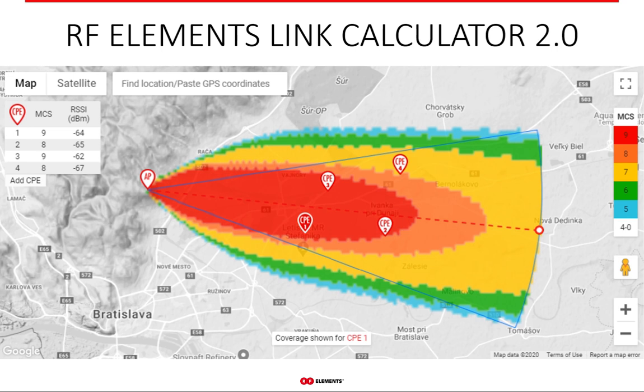If you're wondering how to figure out the down tilt you need, our Link Calculator 2.0 is the right tool, because it plots MCS zones directly on the map. Let me switch to the link calculator and show you how it works, and how to arrive at the correct down tilt.